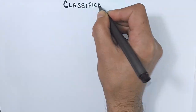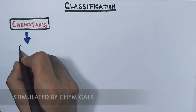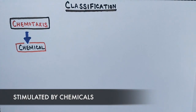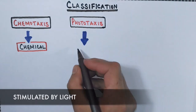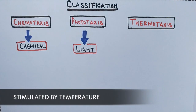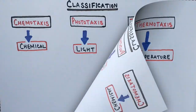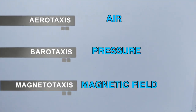Now let's look at the classification of taxis on the basis of stimulus. First, we have chemotaxis, stimulated by chemicals and mostly seen in bacterial populations. Then there is phototaxis, a movement stimulated by light, like in zooplanktons. Then we have thermotaxis, stimulated by temperature. There are also movements stimulated by air, pressure, and magnetic field, called aerotaxis, barotaxis, and magnetotaxis respectively.